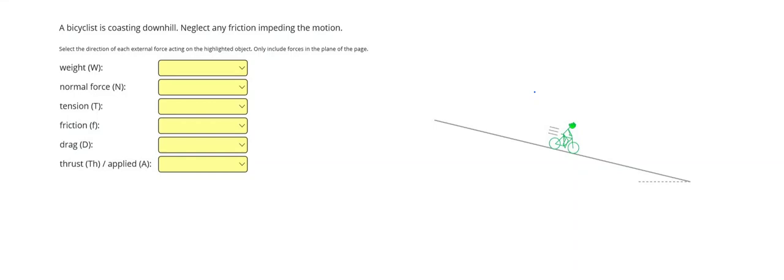A bicyclist is coasting downhill. Neglect any friction impeding the motion. All right, so this is the first time we have drawn a force that is acting on an object that's on an inclined surface, so a slanted surface like this.